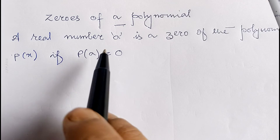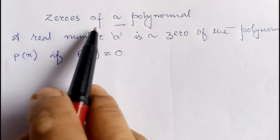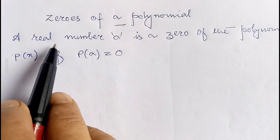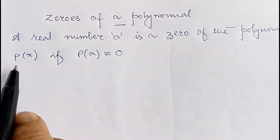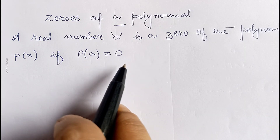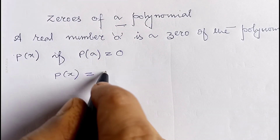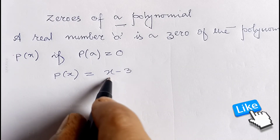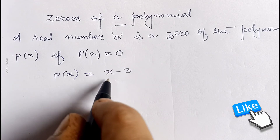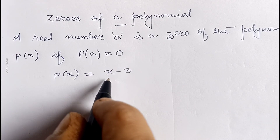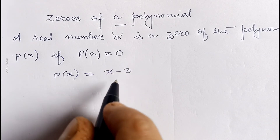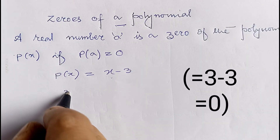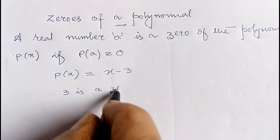The next point I am going to discuss is zeros of a polynomial. A real number 'a' is a zero of the polynomial p(x) if p(a) equals zero. Suppose one polynomial p(x) is x minus 3. The real value of x for which this becomes zero is called the zero of the polynomial. Here clearly if x equals 3 then it becomes zero, therefore 3 is a zero of this polynomial.